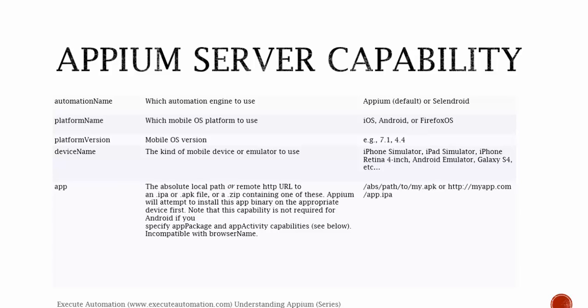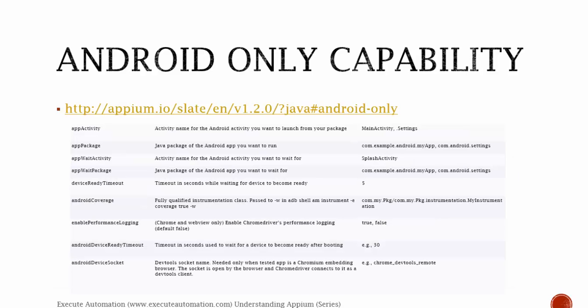Similarly, it has something called platform version, device name, app — all those things which you can find on the Appium.io website itself. The Android-only capability is also available in Appium, and this includes app activity, app package, app wait activity, app wait package, device ready timeout — all those things which you can find from the link. This is actually very important because you will be using some of these desired capabilities in your programs as well. Before starting an actual test in upcoming videos, we will first set the desired capabilities, and we will use some of these Android capabilities as mandatory fields.